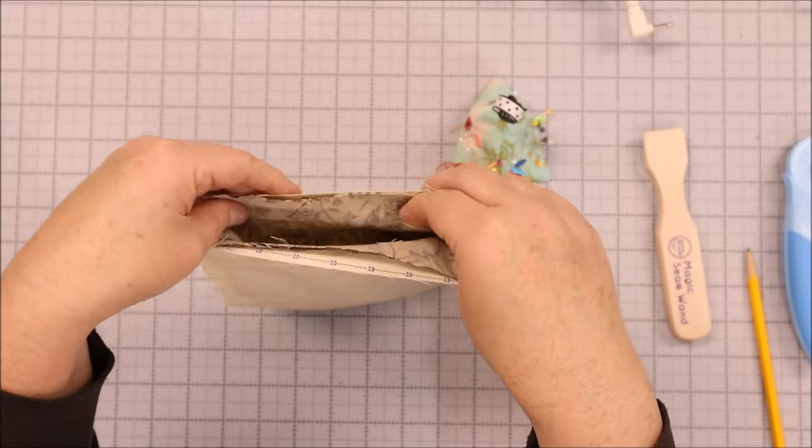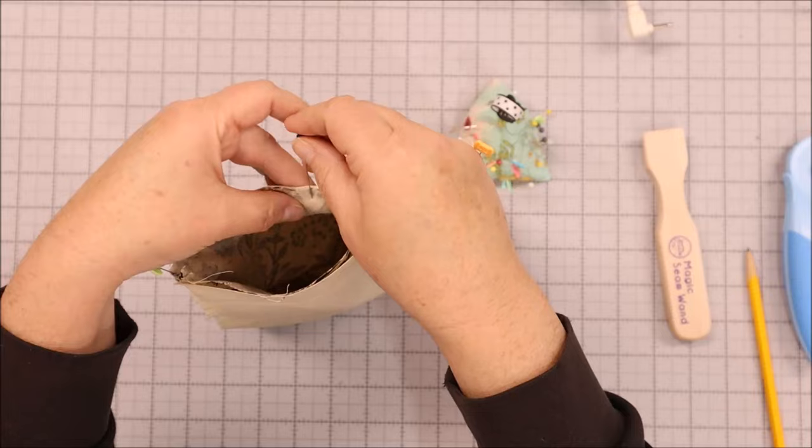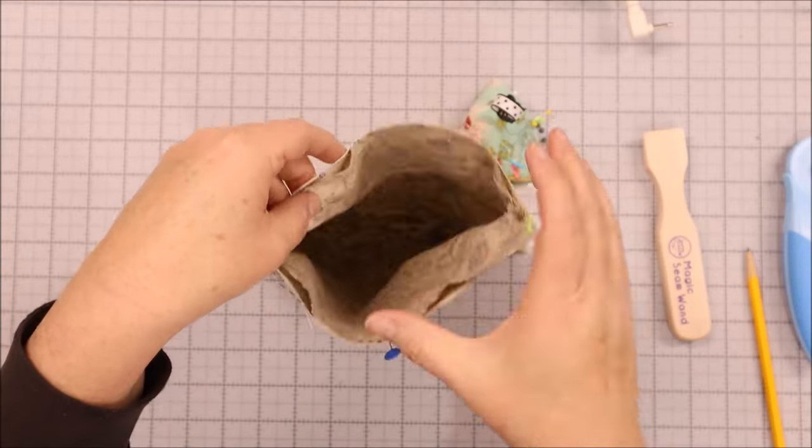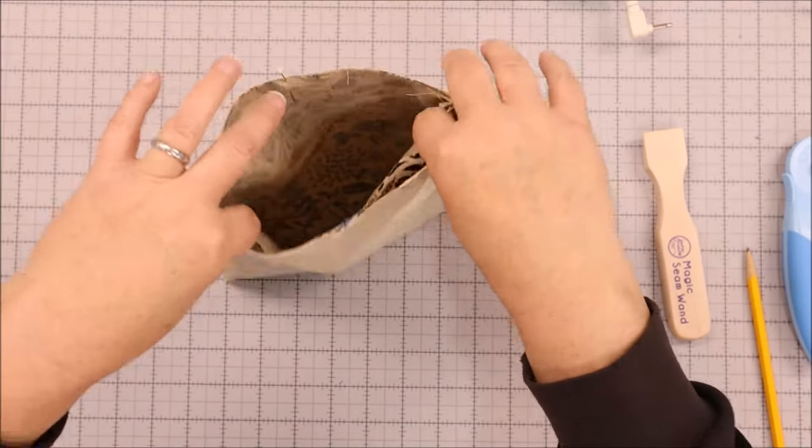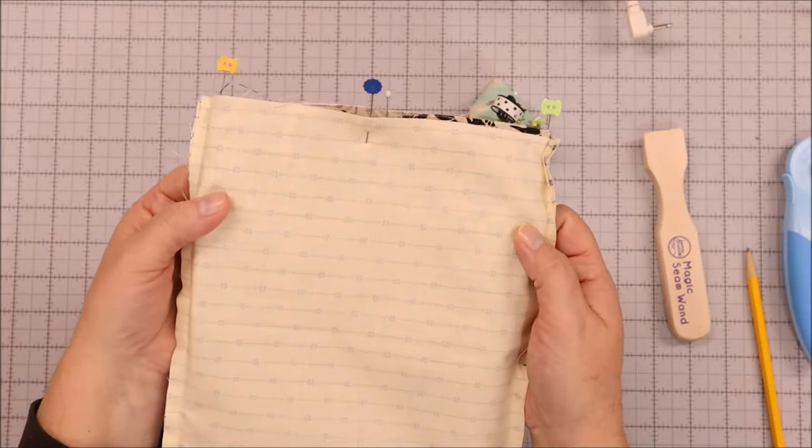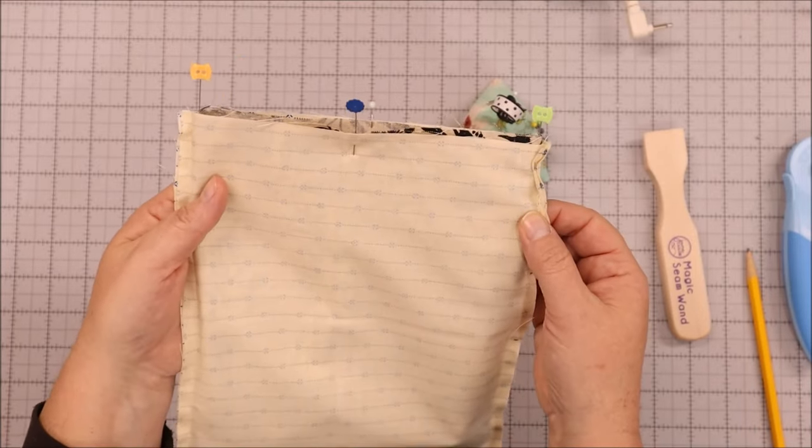If you need to, you can place a couple more pins just in the center here to make sure that they don't shift or move when you're sewing it down. So now we've got this all pinned and ready to go. So we're just going to take this to the sewing machine and we are going to stitch all the way along that top edge.